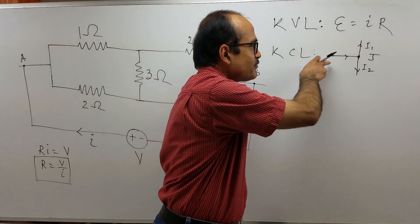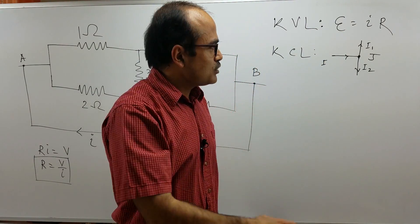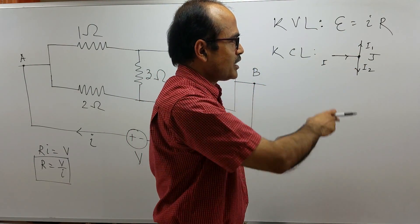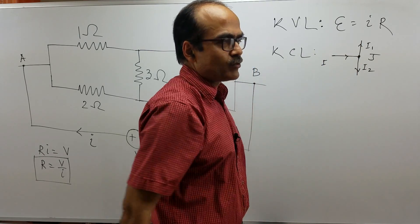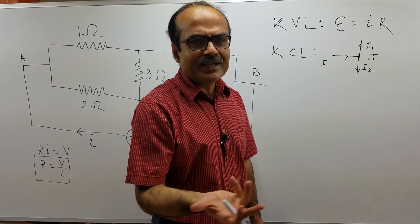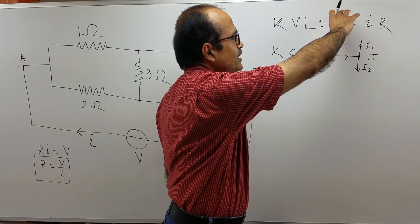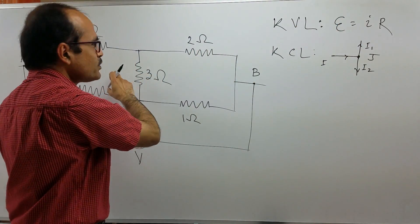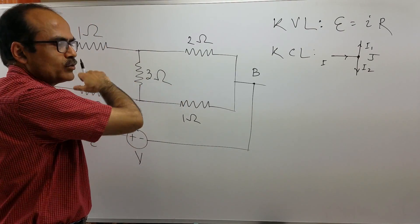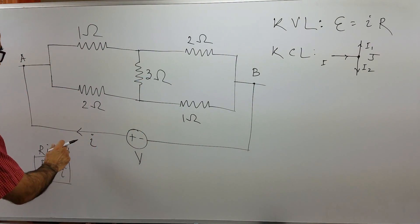And KCL is very intuitive. At any point or any junction in a circuit, the current can neither be stored nor be destroyed. Whatever current flows in actually flows out. If I is flowing in and I1 and I2 are flowing out, then I equals I1 plus I2. That is KCL. It is absolutely intuitive. KVL is total EMF supplied in any loop equals the voltage drop in that loop. So let us use KVL and KCL here.